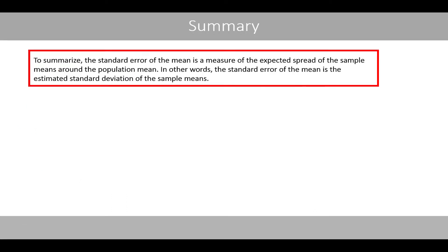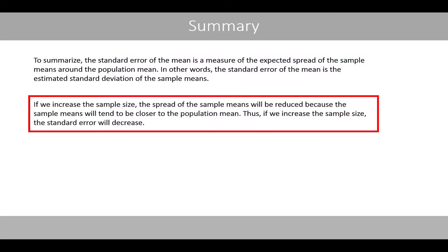To summarize, the standard error of the mean is a measure of the expected spread of the sample means around the population mean. In other words, the standard error of the mean is used to estimate the standard deviation of the sample means. If we increase the sample size, the spread of the sample means will be reduced, because the sample means will tend to be closer to the population mean. Thus, if we increase the sample size, the standard error will decrease.